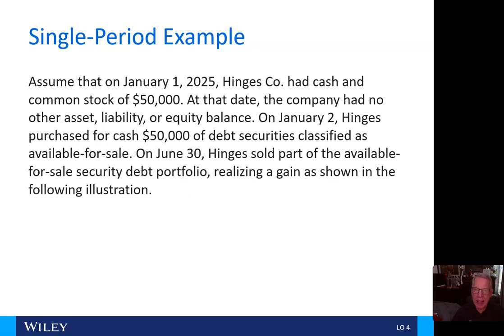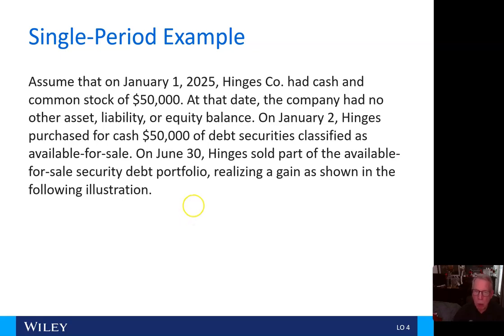At that date the company had no other asset, liability, or equity balance. On January 2, Hinges purchases for cash $50,000 of debt securities classified as available for sale. On June 30, Hinges sold part of the available for sale security debt portfolio, realizing a gain as shown in the following illustration.